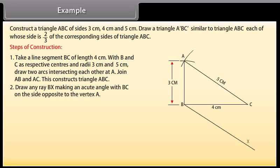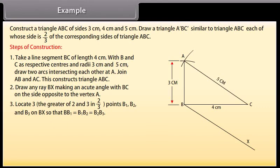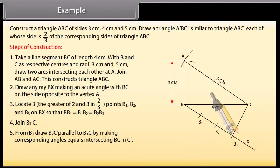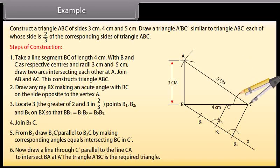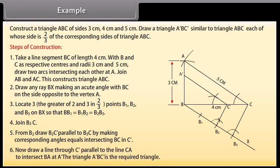Draw any ray BX making an acute angle with BC on the side opposite to the vertex A. Locate 3 points — the greater of 2 and 3 in 2/3 — B1, B2 and B3 on BX so that BB1 = B1B2 = B2B3. Join B3C. From B2, draw B2C' parallel to B3C by making corresponding angles equal, intersecting BC at C'. Now draw a line through C' parallel to the line CA to intersect BA at A'. The triangle A'BC' is the required triangle.